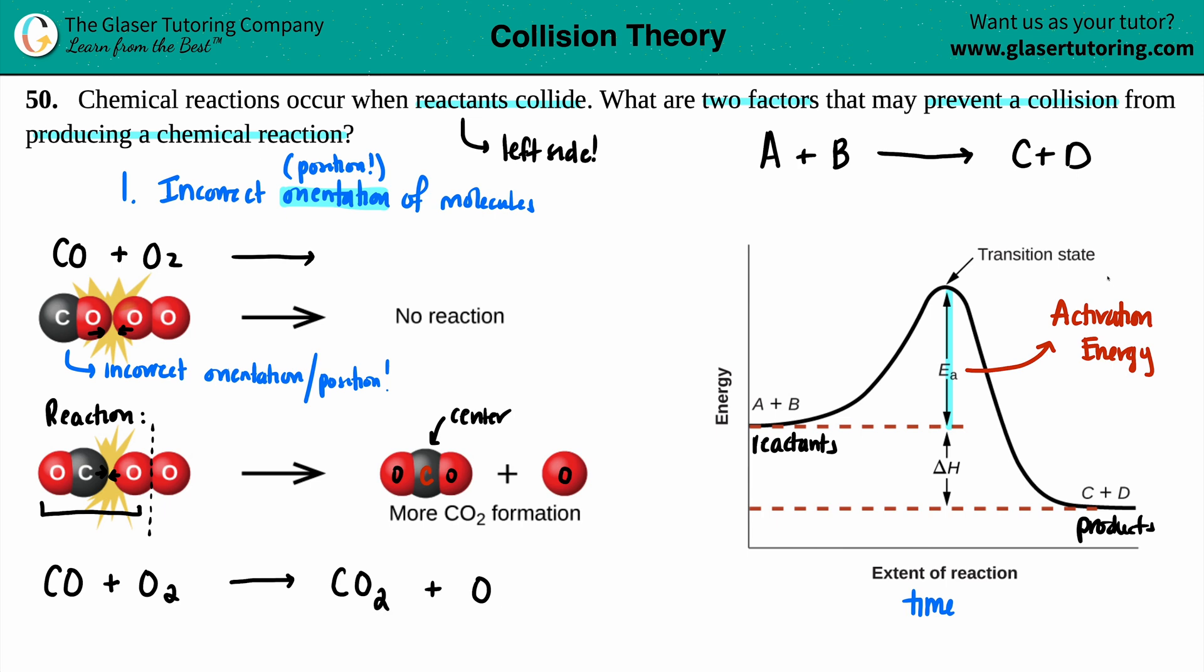But for right now, just know that the activation energy, which is represented as EA, the activation energy is the energy always from your start, wherever your reactants are, all the way to the tippy-tippy top. That's where your most unstable orientation is throughout the whole reaction. It's generally an intermediate, maybe, but it's called a transition state, in this case, because it's only one step. But you have to reach that highest amount of energy.